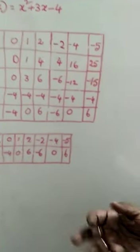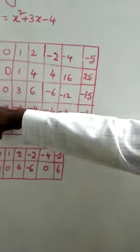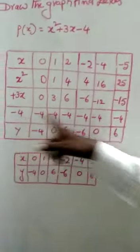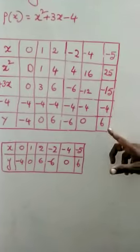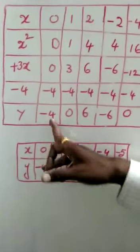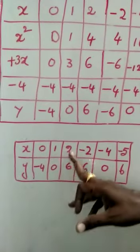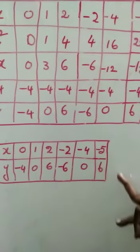We need one more value to shape the graph nicely. For x equals minus 5: minus 5 squared is 25, 3 times minus 5 is minus 15, minus 4, so 25 minus 15 is 10, minus 4 gives P(minus 5) equals 6. So the summary table is: x = 0, y = minus 4; x = 1, y = 0; x = 2, y = 6; x = minus 2, y = minus 6; x = minus 4, y = 0; x = minus 5, y = 6.